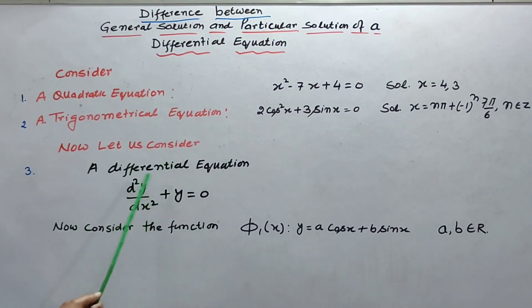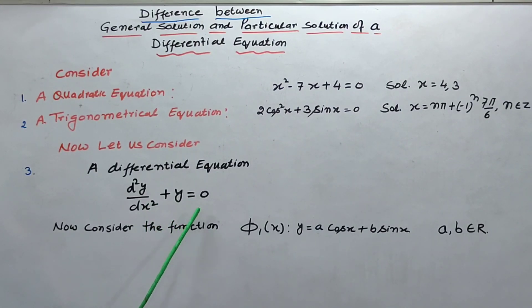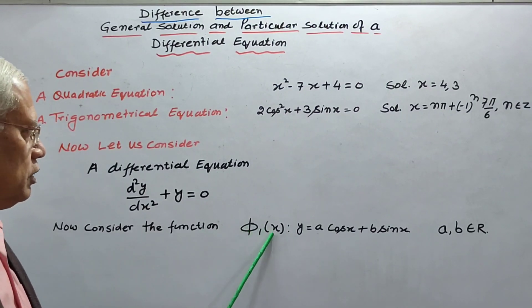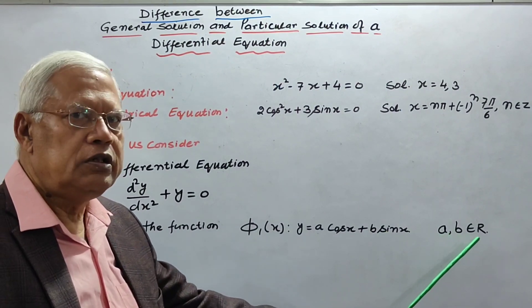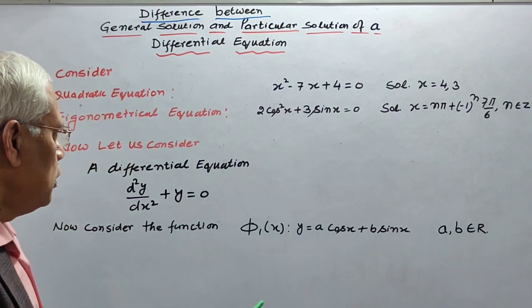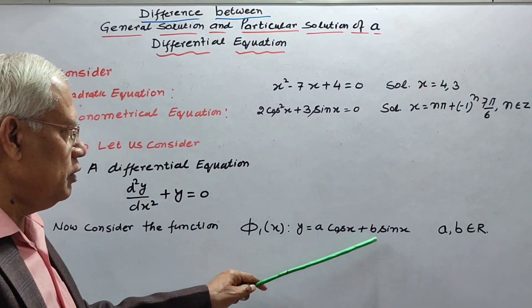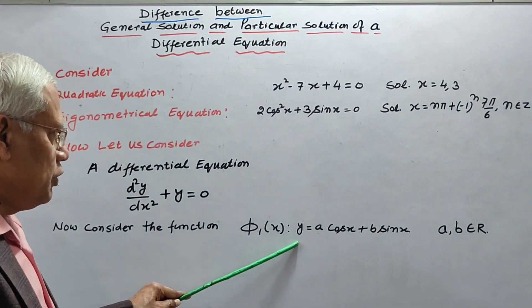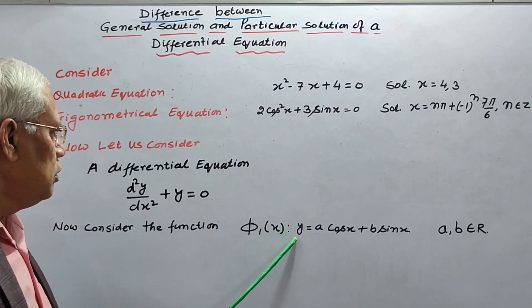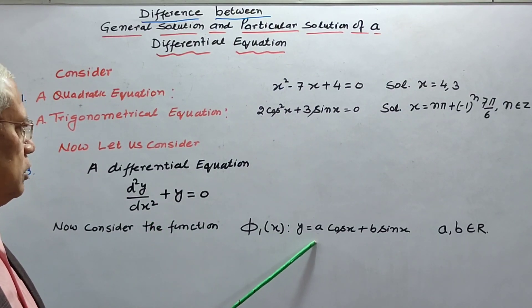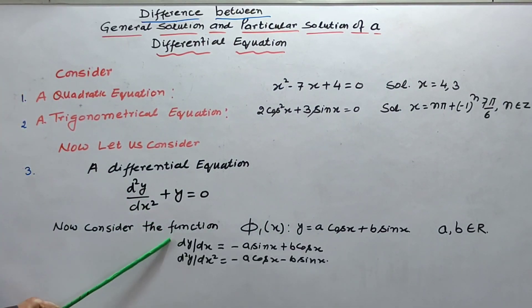Now let us consider a differential equation: d²y/dx² + y = 0. And consider the function φ₁(x), which is y equal to a cos x plus b sin x, where a and b are real numbers. We will verify whether this function is a solution of this differential equation. For this, we will find dy/dx, then d²y/dx², substituting these values in this equation.